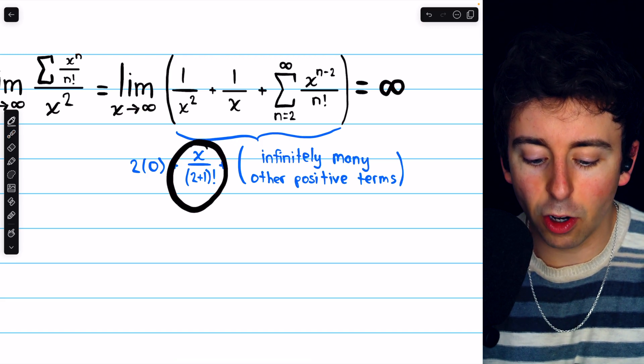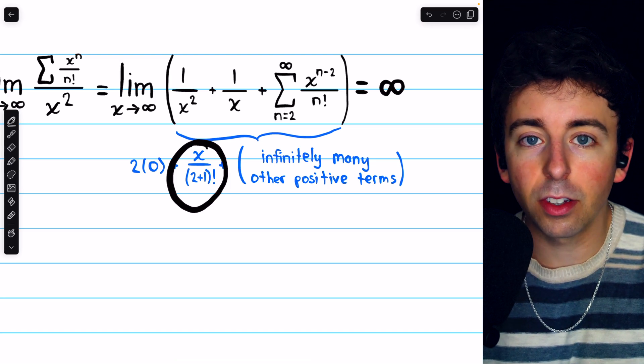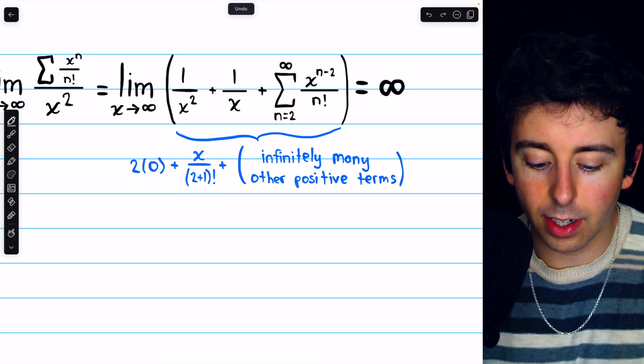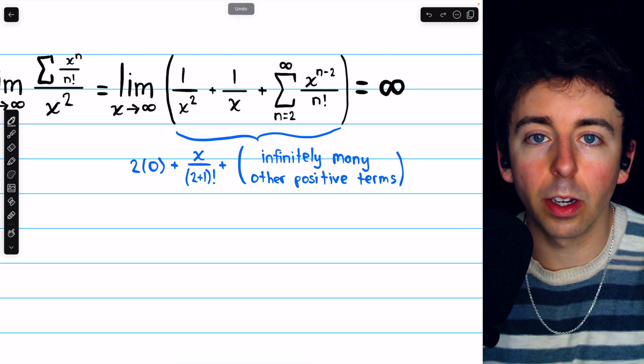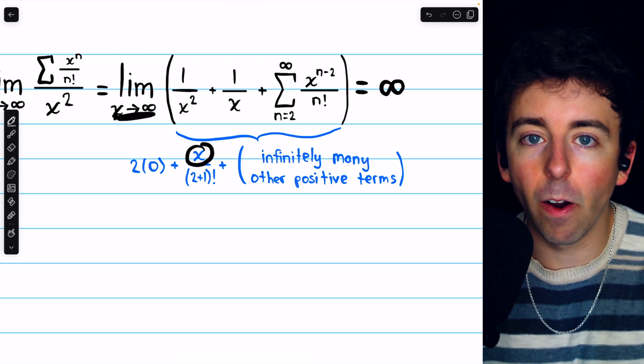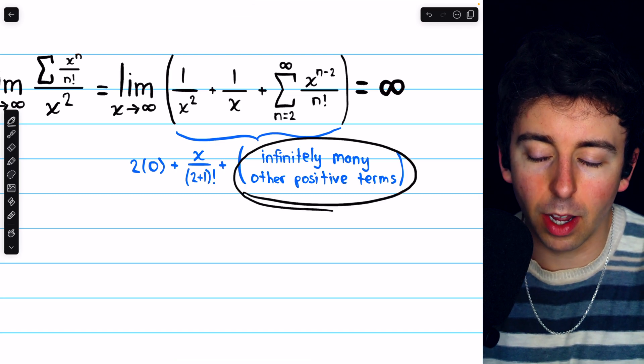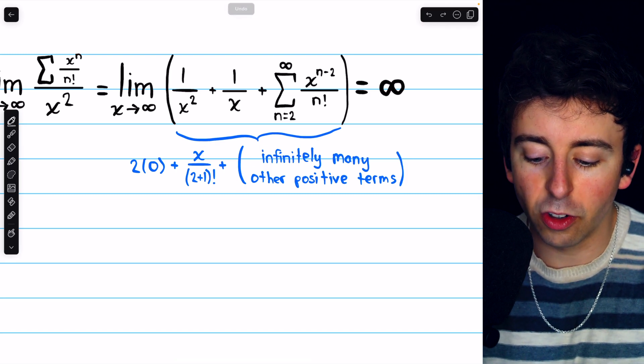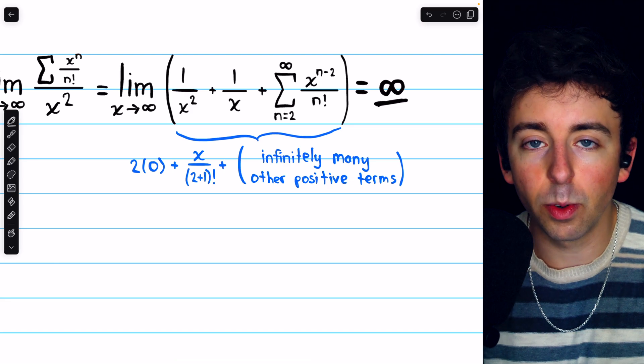In particular, by taking this term out, it's very clear this goes to infinity. What we have in the denominator is just 3 factorial, or 6, but the numerator is getting arbitrarily large. And of course, adding infinitely many other positive terms is not going to change the fact that it diverges to infinity.